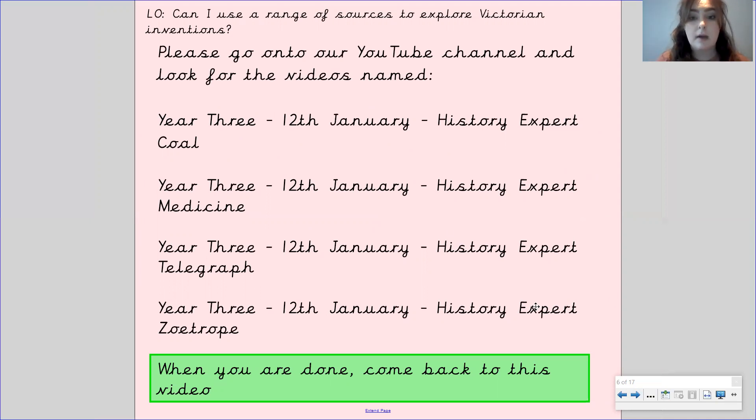So the first invention that you'll be looking at is coal, then the next invention will be something about medicine, the third one is the telegraph, and then the fourth one is a zootrope. And when you are done watching these videos and making your notes, please come back to this video so I can set your task for you.